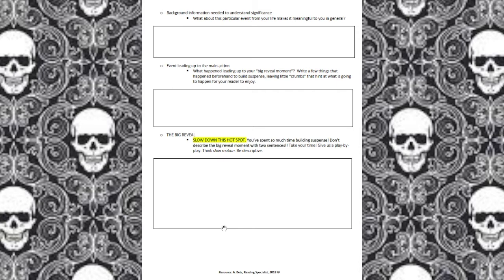On the next page of our paper skeleton we have 'background information needed to understand significance.' Here you're going to provide background information helpful to the reader to understand why this memory is important or to understand a particular event. For example, if you're writing about a cheerleading competition at Slippery Rock University, what background information does the reader need? How long have you been training to get there? Was this your first time there? Things like that will help the reader understand the significance.